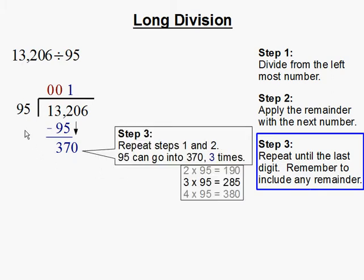So that means we're going to repeat the step of division. Can 95 go into 370? And that is yes. 95 times 3 gets you 285. 95 times 4 gets you 380. So that's too big. So 95 goes into 370 3 times. So the 3 goes on top. 3 times 95 is 285.